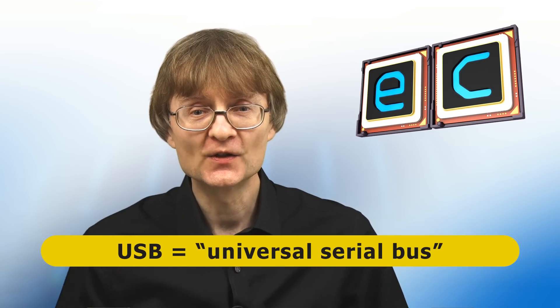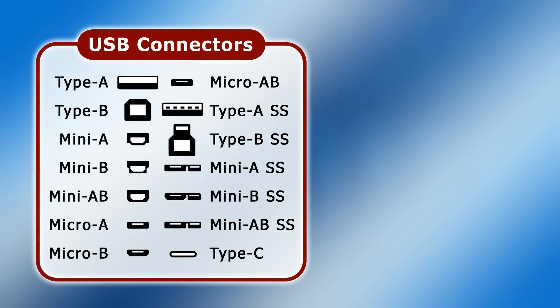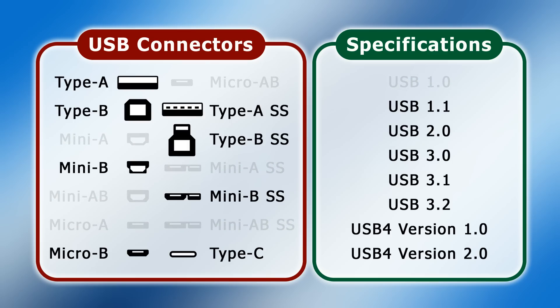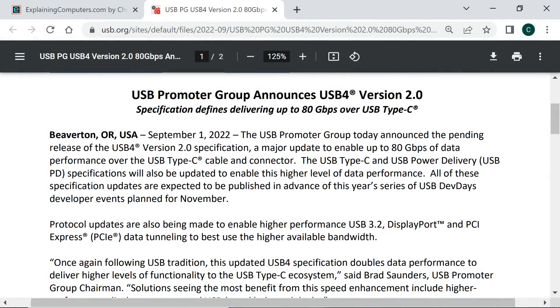Welcome to another video from ExplainingComputers.com. This time I'm going to talk about USB, or the Universal Serial Bus. This common standard for connecting computers and peripherals was first introduced in 1996, and since that time 14 different physical connectors and 8 different USB specifications have been released. Today many of these have been deprecated, but even so there are still eight connectors and six different USB specifications in fairly common use. With USB 4 version 2.0 announced in September 2022, there will soon be seven USB specifications out there in the wild.